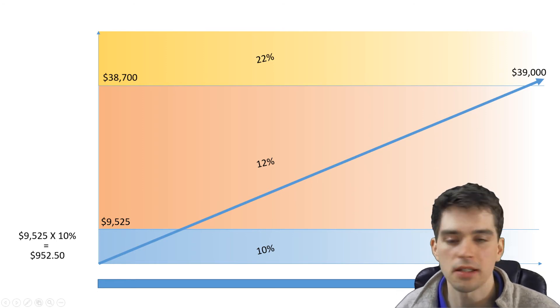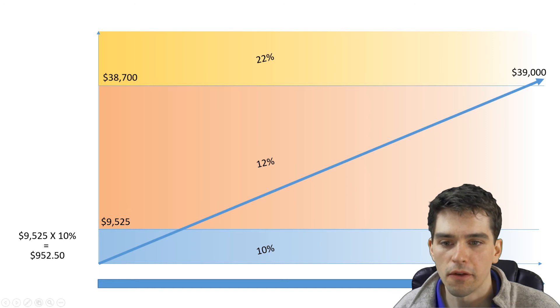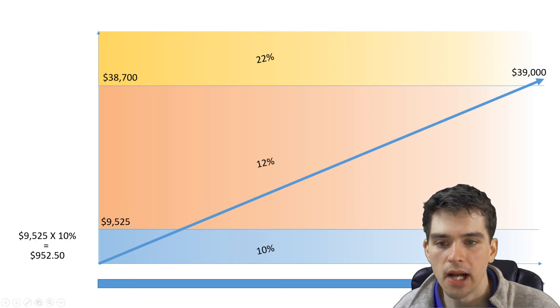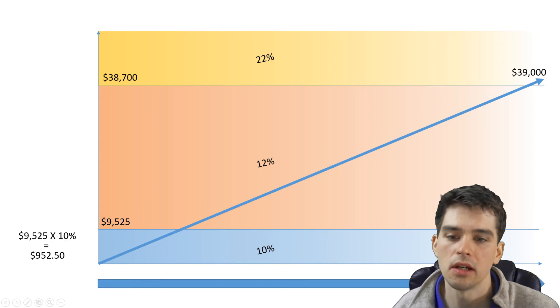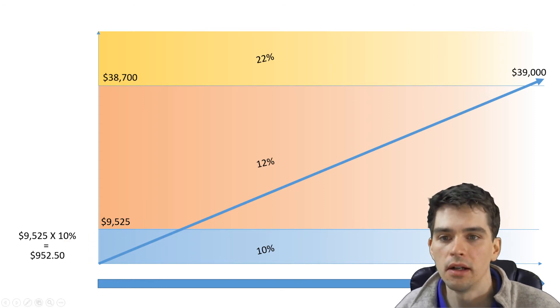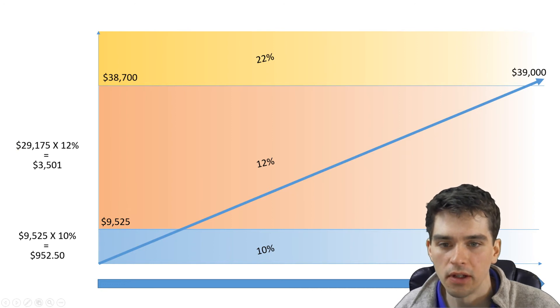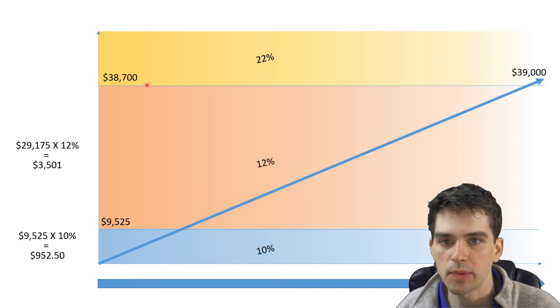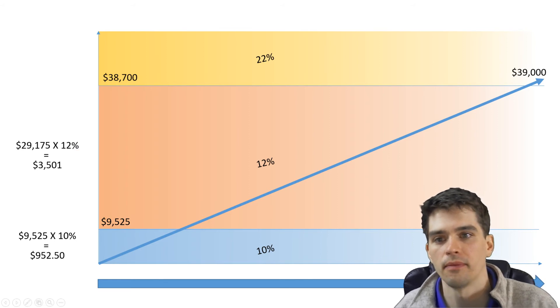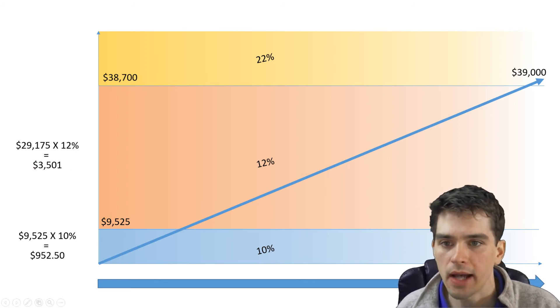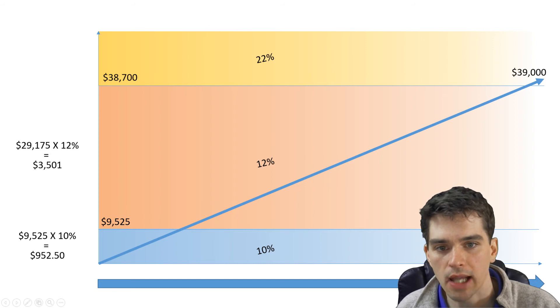If I make $39,000 a year, the first $9,525 is taxed at 10%. So I would pay $952.50 in taxes on that money. The next $29,175, which is the amount between this tax bracket and that tax bracket, is taxed at 12%. If you do that multiplication, you owe $3,501 in taxes on this money.